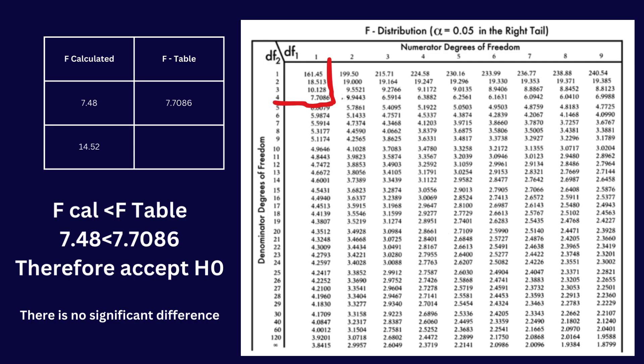Let's determine whether the difference is significant using the F table. The numerator degree of freedom is 1 (since the degree of freedom for A is 1) and the denominator degree of freedom is 4 (the degree of freedom for BA). We got an F table value of 7.7086. This value is larger than our calculated F value, so we accept the null hypothesis — there is no significant difference.